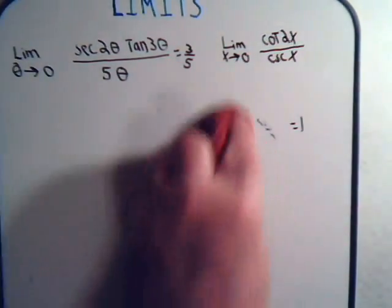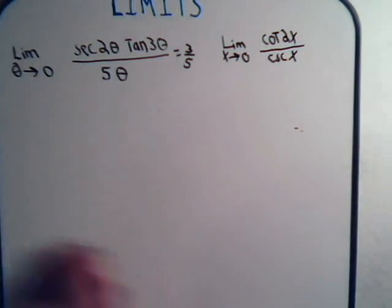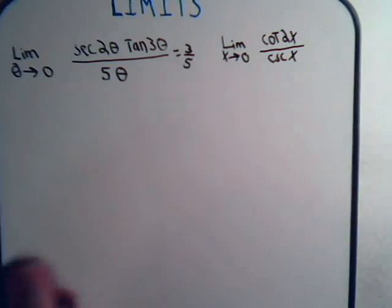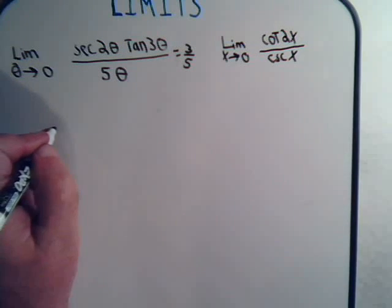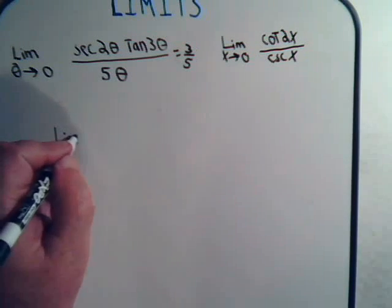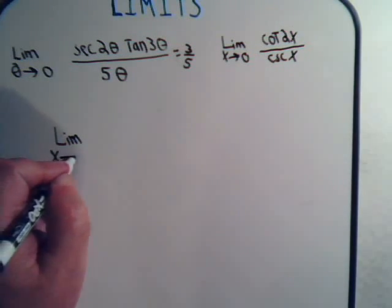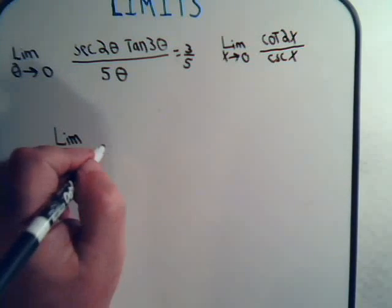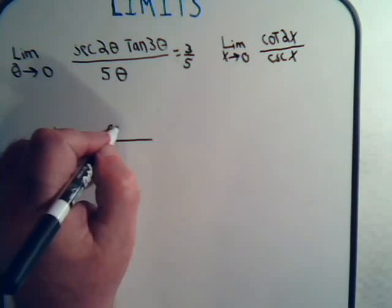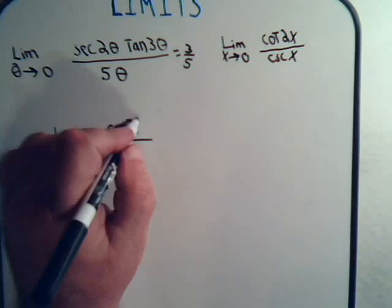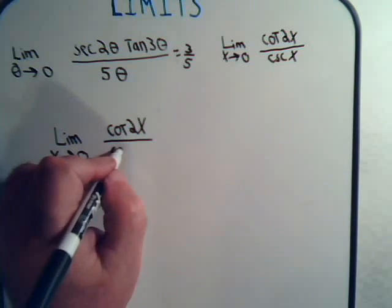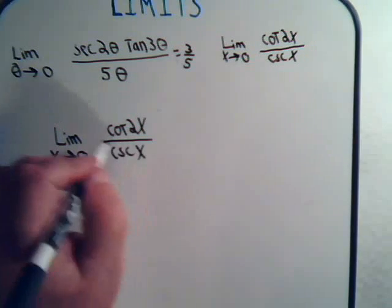Let's see. Here we have, for our next and final one, we have the limit as x goes to 0 of the cotangent of 2x divided by the cosecant of x.